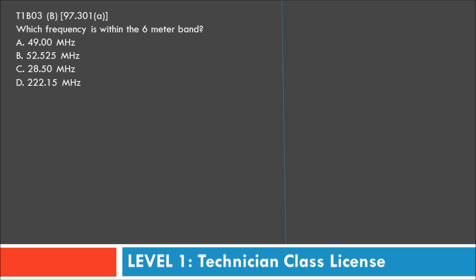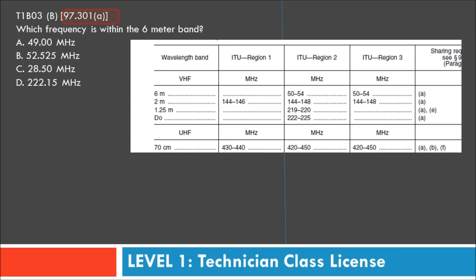Question three: which frequency is within the 6-meter band? This references 97.301, the frequency allocation chart, which shows the 6-meter band runs from 50 to 54 MHz. If you remember that, you'd have no problem identifying the answer as B — 52.525 MHz.